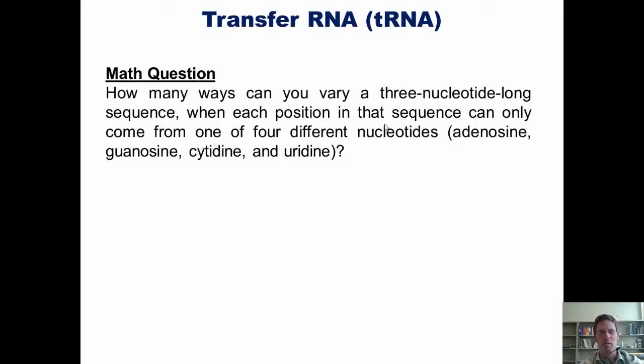So here's a math question. How many ways can you vary a three-nucleotide-long sequence when each position in that sequence can only come from one of four different nucleotides: adenosine, guanosine, cytidine, and uridine?